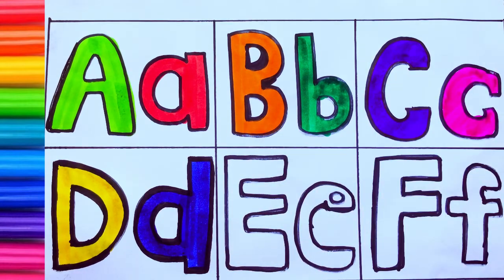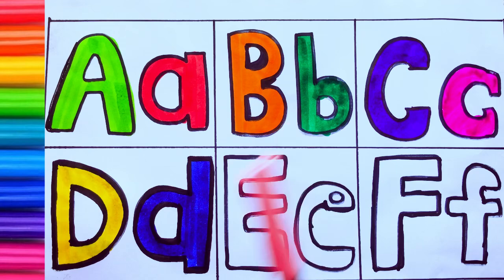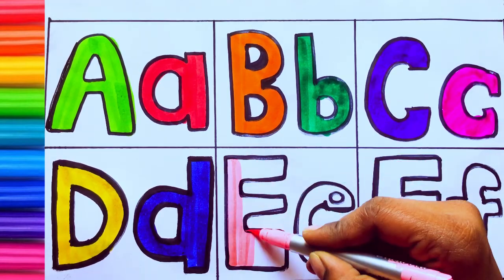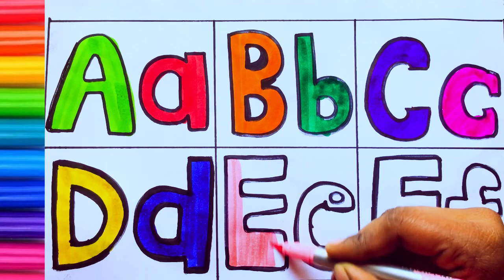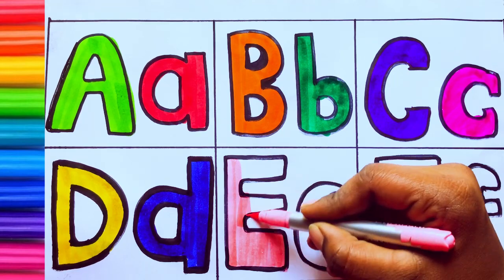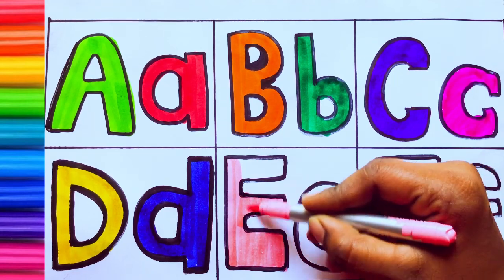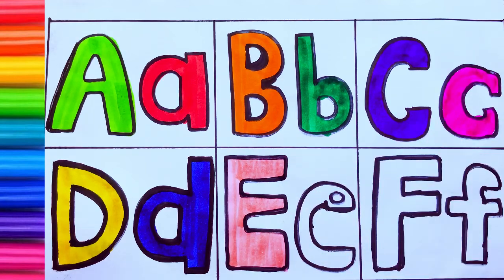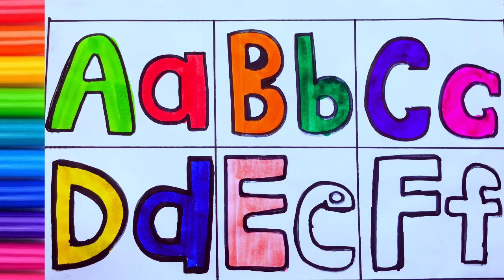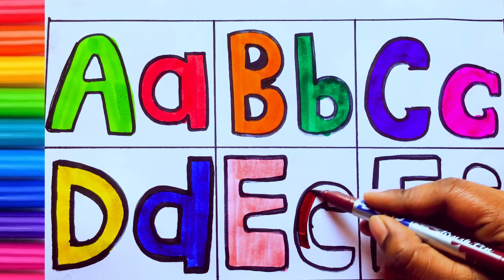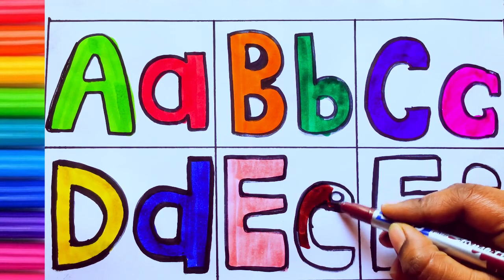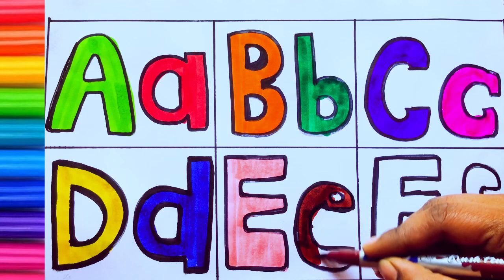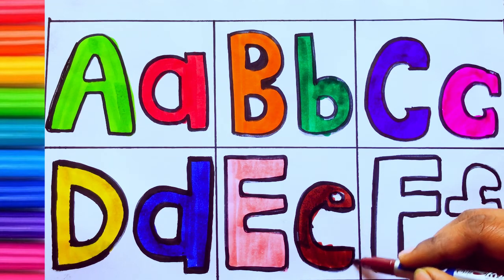Pink color, E. E for egg. E for egg, E-G-G, egg. Brown color, small e, E for elephant. E for elephant, small e.